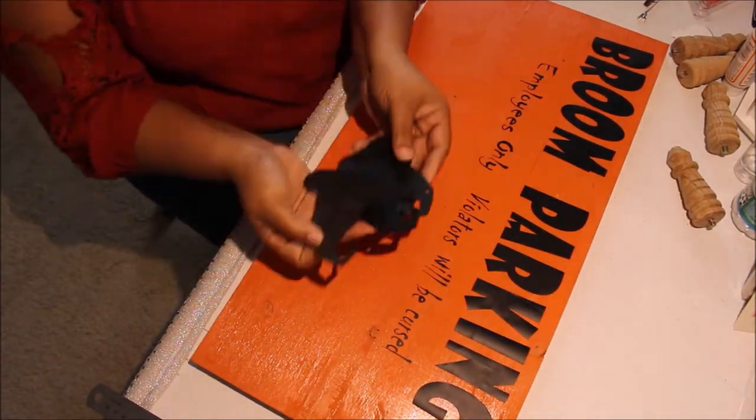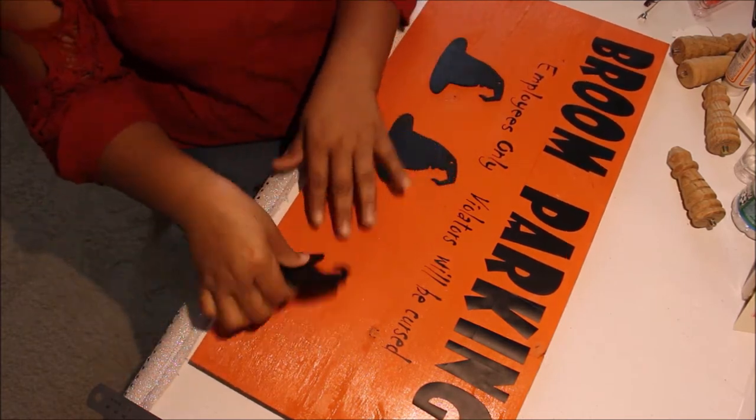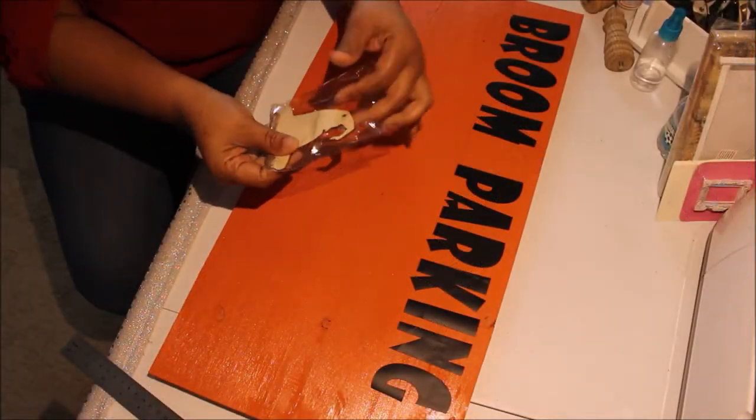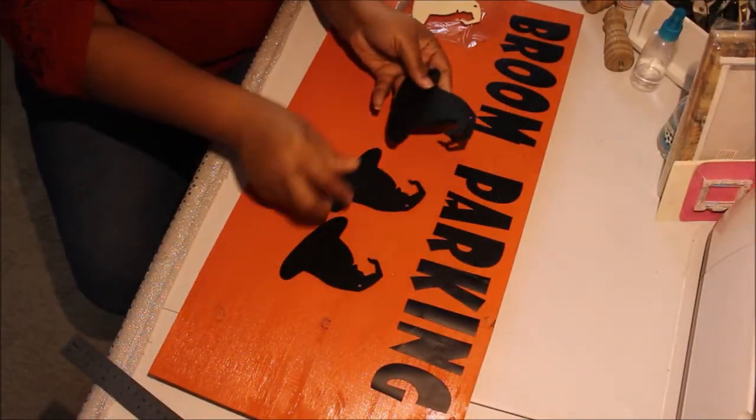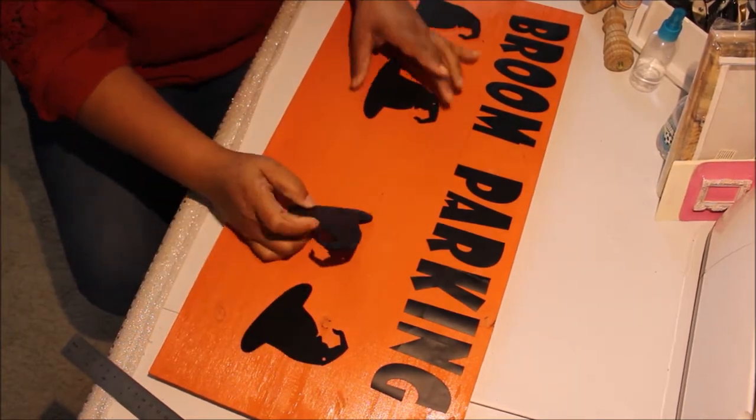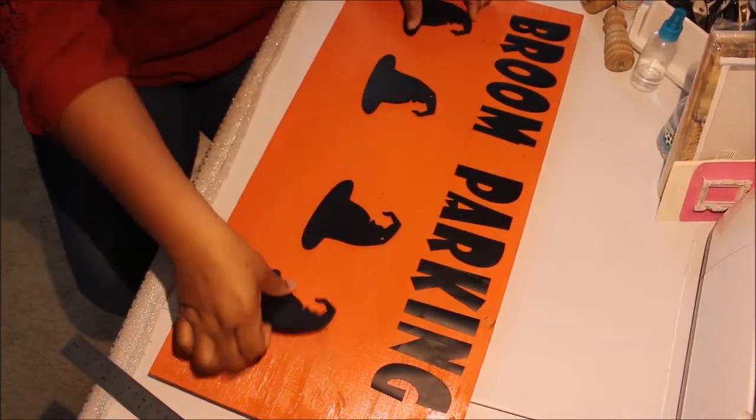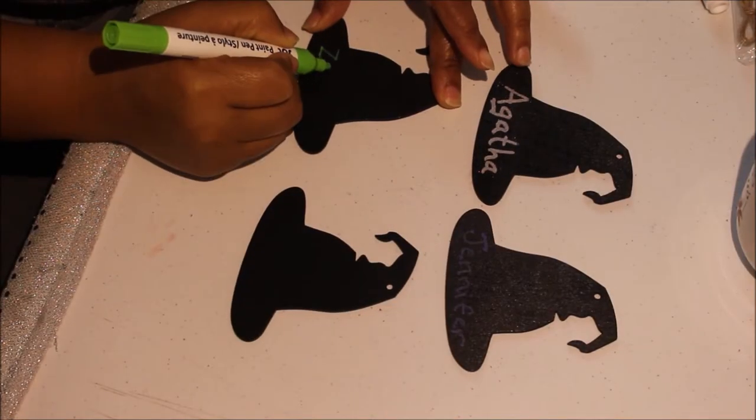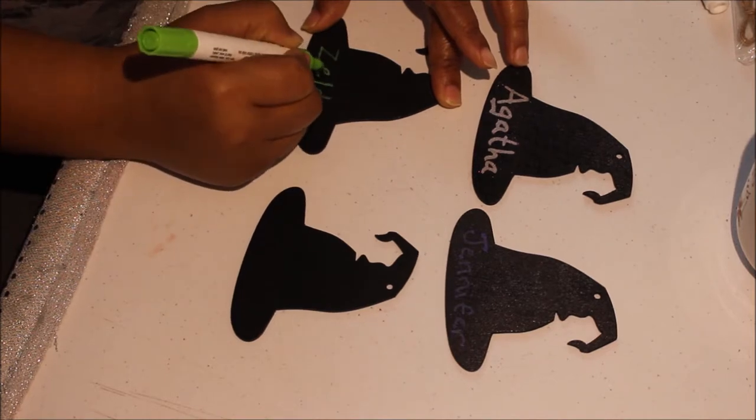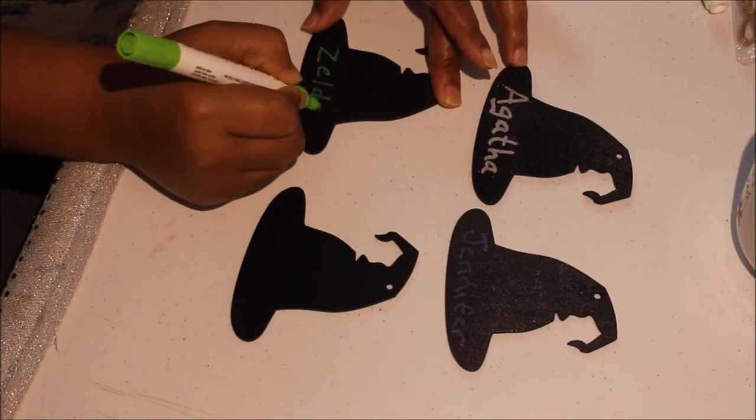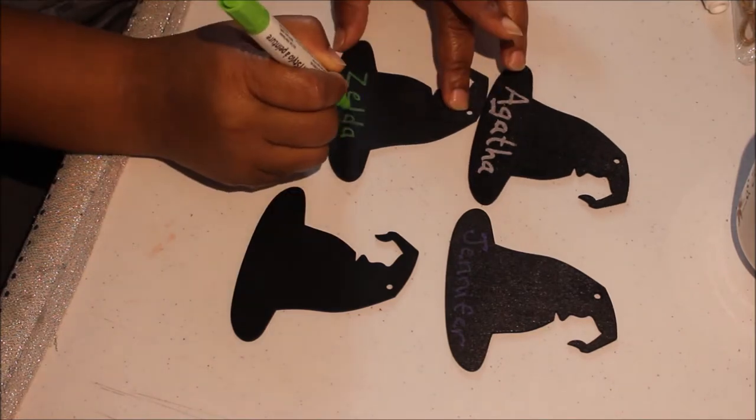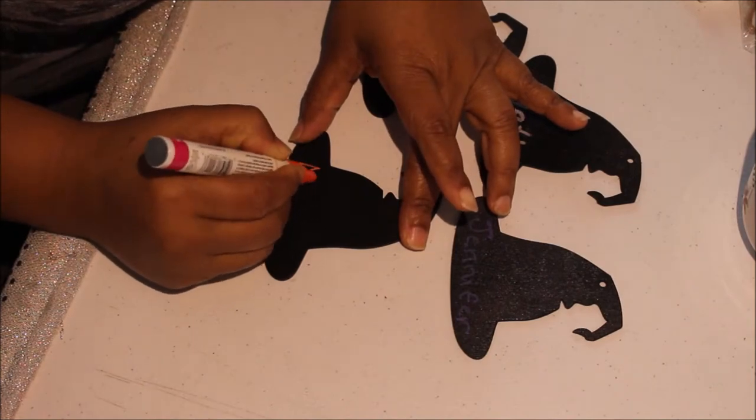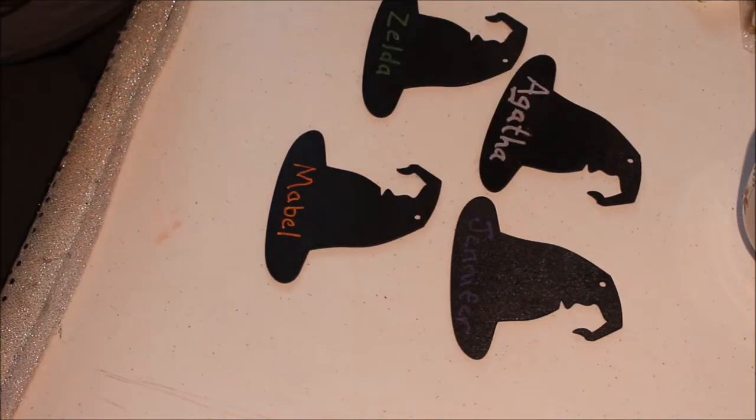Here are those witch hat wooden cutouts that Dollar Tree had this year. I was placing them on to see how much spacing I needed to account for. What I did was I took some good old black spray paint and spray painted these. Right now I'm just writing the names of the employees on the hats. We have Agatha, Jennifer, Mabel and Zelda. I just googled the names and I'm using the paint pens that Dollar Tree sells to write the names.